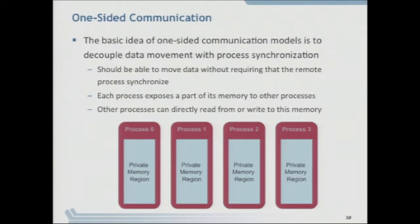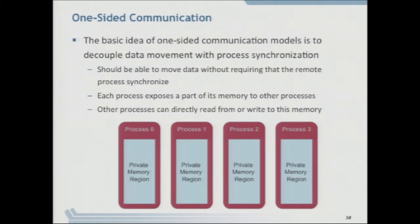Then MPI 2 came along — that was 1997 — and added new features, one of which was one-sided communication. The other was parallel I/O, which we won't talk about today because there's an I/O talk next week. There was also dynamic process management, where you can add to the number of processes in an MPI program or connect separately started MPI applications. We're not covering that today because on large systems like IBM and Cray, they don't support dynamic process management due to interactions with their job scheduling and resource managers.